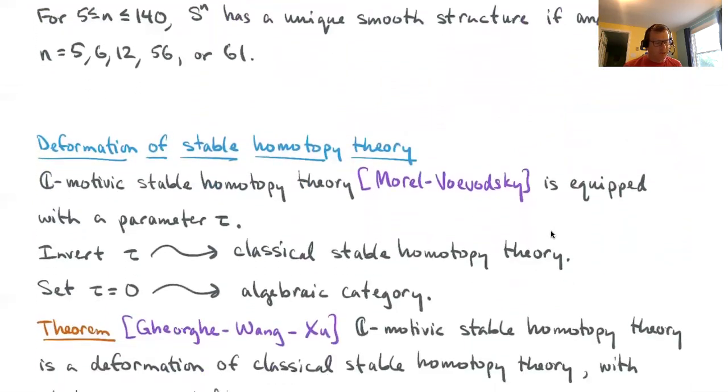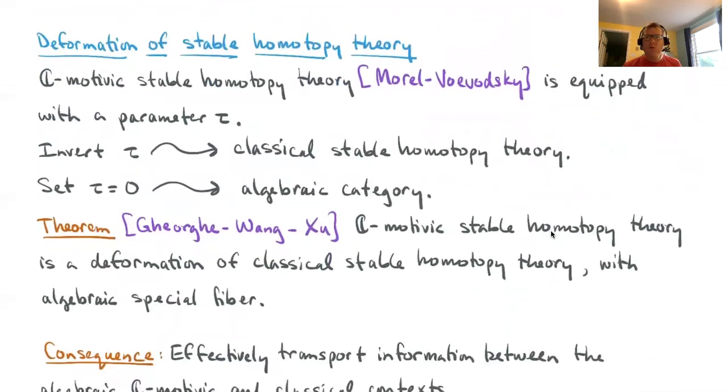Let's get back to the stable homotopy groups themselves. The way that I have studied stable homotopy groups in recent years is through this idea of a deformation of stable homotopy theory. We're using algebraic geometry here to study problems in algebraic topology. This homotopy theory is equipped with a parameter τ. I'm being a little bit vague about what I mean by a parameter here, and that's because the details would take us into too technical of a direction.